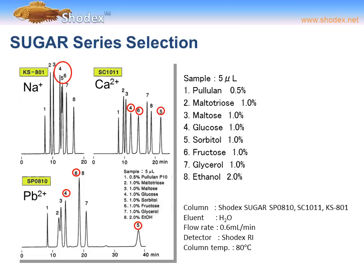We can see the effects of different counter ions on sugar retention. Comparing the KS801 (sodium counter ion), SC1011 (calcium counter ion), and SP0810 (lead counter ion): with sodium, glucose, sorbitol, and fructose cannot be separated. With the calcium SC1011, all three sugars are clearly separated within just over 20 minutes. With the lead SP0810, the three sugars are also resolved, but sorbitol takes almost 40 minutes to elute.